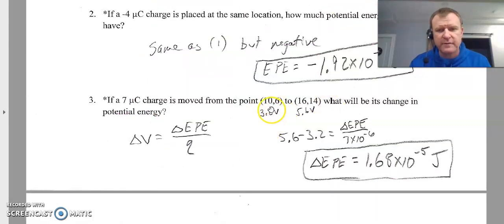But I got about 3.2 volts at this point, 5.6 at that point. So the change in potential, I would just subtract those, equals the change in energy per charge, solve for that change in energy. That's how I got that answer.